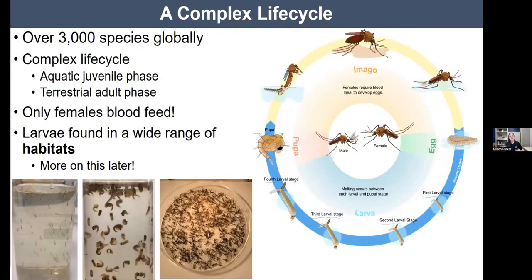I find mosquitoes really fascinating creatures, even though I want to get rid of them. There are over 3,000 species of mosquitoes worldwide, 176 known species in the United States alone, and over 88 in Africa. Not every species transmits disease. Mosquitoes have a complex life cycle: when we think of them, we think of the flying adult, but for their juvenile stage they actually live in water. The adult females must take a blood meal, while males don't bite us at all.